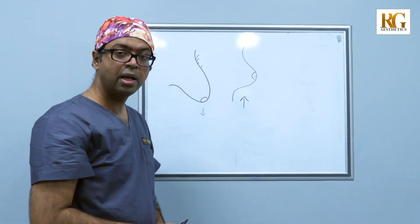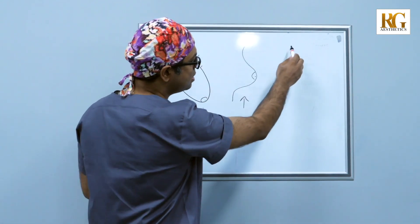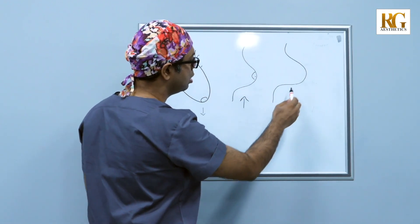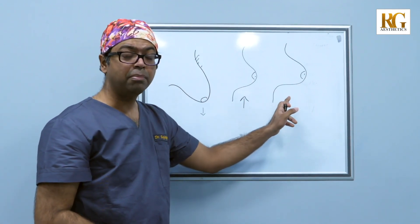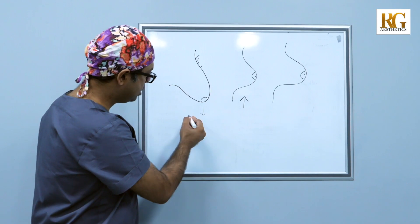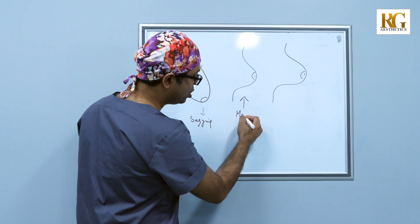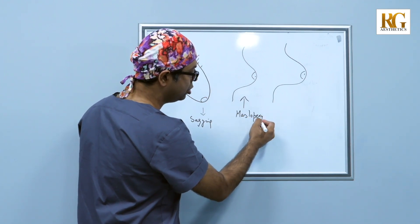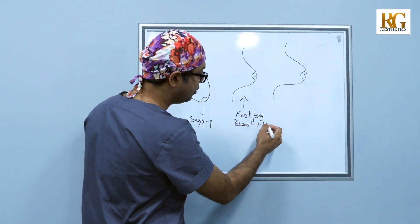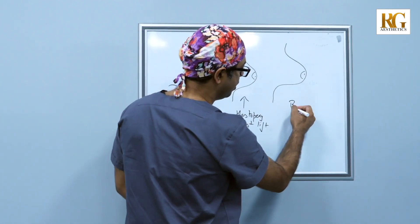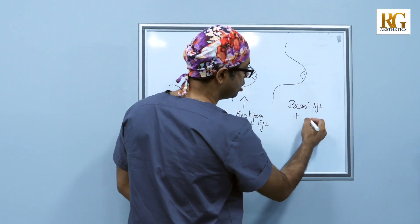If along with this lift they go on and increase volume, such as this, this can be done by adding a volume. So this is a sagging breast, this is after a mastopexy surgery or a breast lift surgery, and this is breast lift plus augmentation.